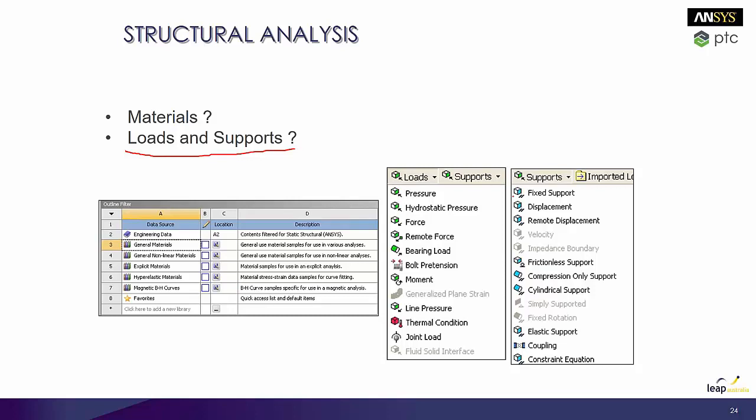There's a snapshot of some of the loads and supports that we can apply to a model. In the demonstration we can't cover all of these, but you normally have to take what exists in reality and convert it to what exists in this list. Most of the time you can convert those loads fairly easily because you can make them a little bit more generic than they are in reality.